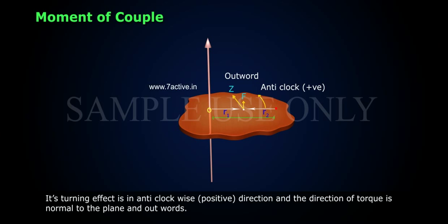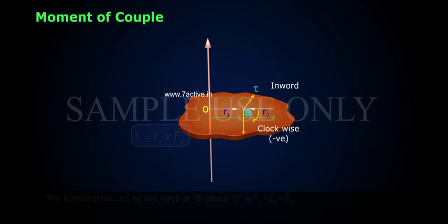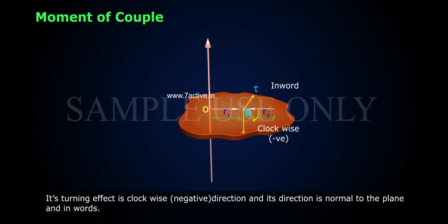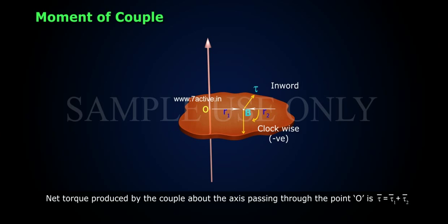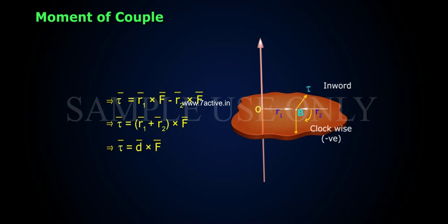Its turning effect is in the anti-clockwise positive direction and the direction of torque is normal to the plane and outwards. The torque produced by the force at B about O is τ2 equals R2 cross (minus F). Its turning effect is in the clockwise negative direction. The net torque produced by the couple about the axis through O is τ equals τ1 plus τ2, which implies τ equals R1 cross F minus R2 cross F, giving τ equals D cross F.